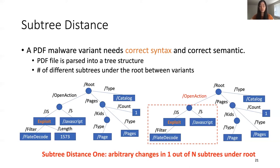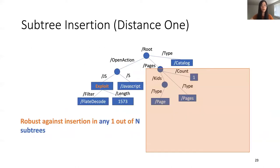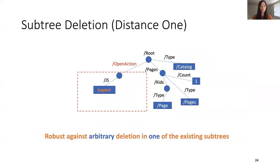The subtree distance can be extended to multiple different subtrees under the root. In our experiments, training only two building block robustness properties maintains low false positive rates: subtree insertion and deletion properties at distance 1. The subtree insertion property at distance 1 specifies that all possible manipulations bounded by inserting an arbitrary subtree under the root do not result in a benign prediction. Similarly, the subtree deletion property states that deleting within an arbitrary subtree under the root does not result in a benign prediction. Both properties over-approximate potential attacks.